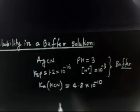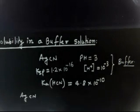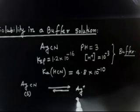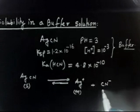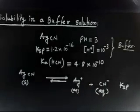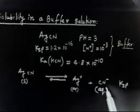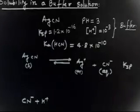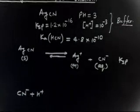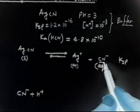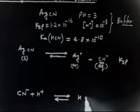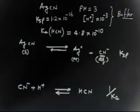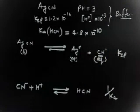AgCN is a solid. When placed in solution, it dissociates: AgCN(s) ⇌ Ag⁺(aq) + CN⁻(aq), with equilibrium constant Ksp. Once CN⁻ enters solution, it reacts with H⁺ — because the solution contains H⁺ from the buffer. So CN⁻ reacts with H⁺ to form HCN, and the equilibrium constant for this reaction is 1/Ka.